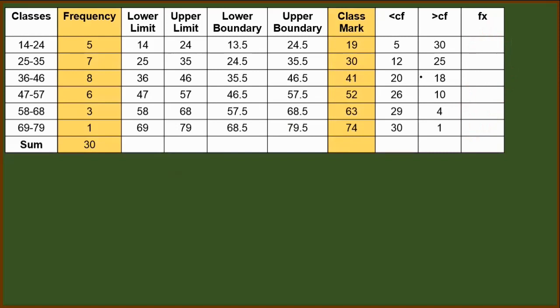So starting off with 5 and 19, 5 times 19, we will have 95. Next, for 7 times 30, we will have 210. Then, for 8 and 41, multiplying them, we will have 328.